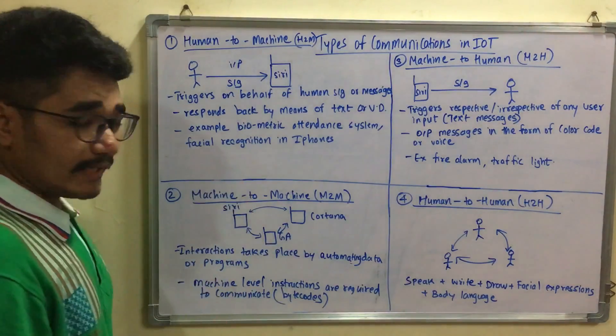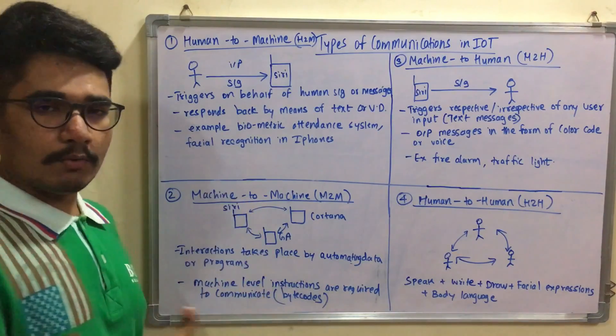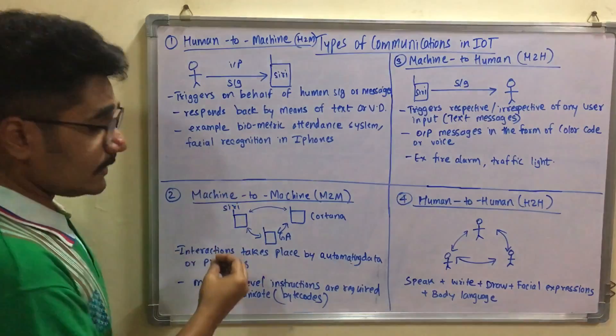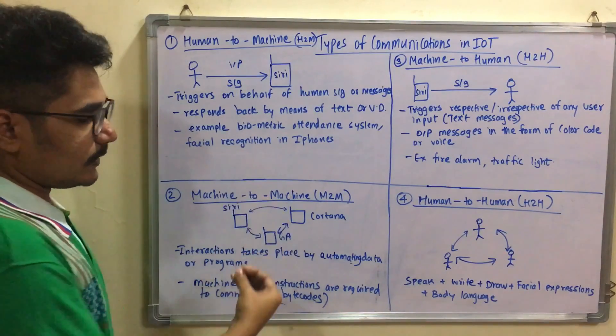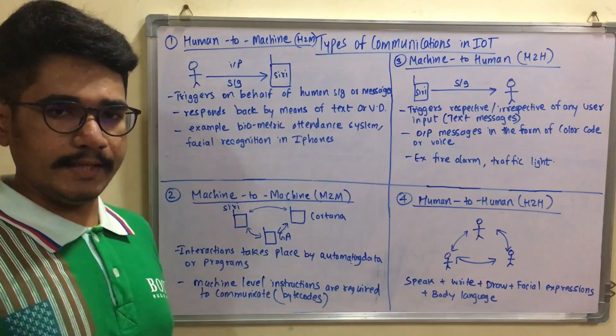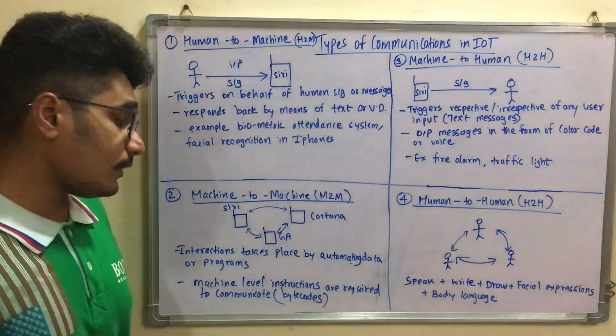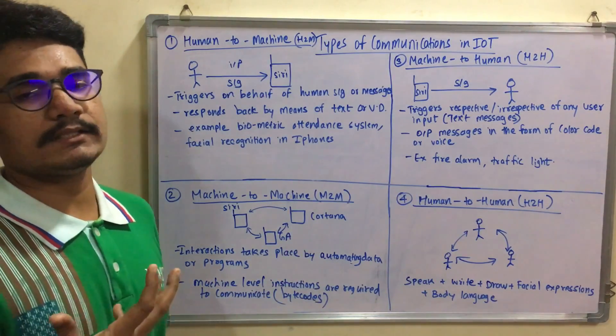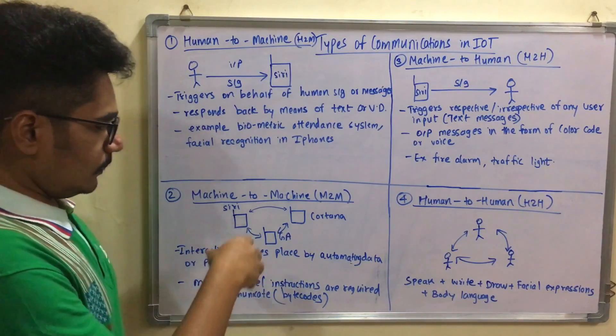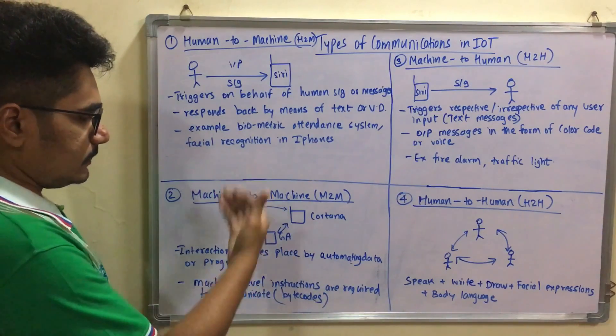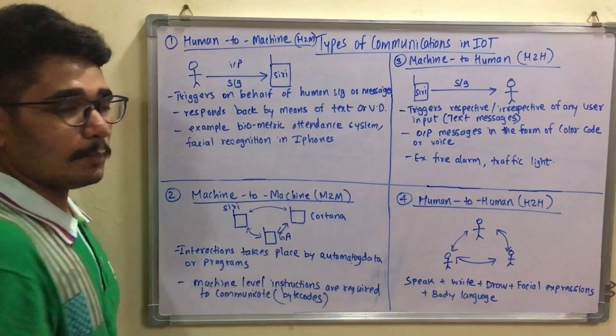This type of interaction takes place by automating data or programs. When set for a particular counter or time interval, it calculates those instructions and triggers output to other devices, communicating for a scheduled time to bring out particular actions. This requires machine level instructions to communicate using byte codes, waves, or sensors. These devices understand what Siri is trying to communicate with Cortana, or what Cortana is communicating with Google assistant, and so on.